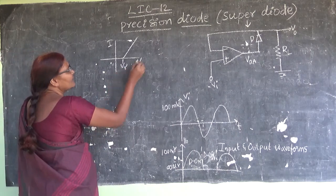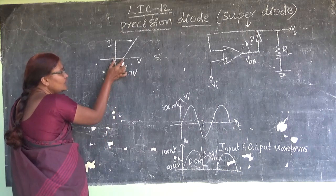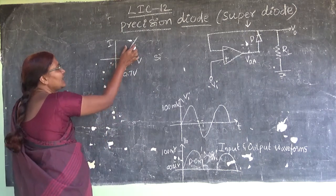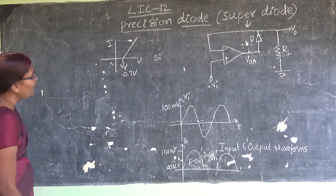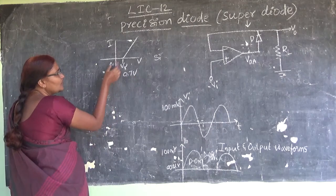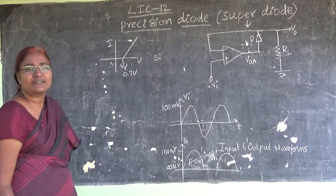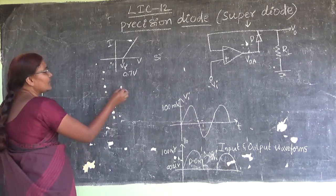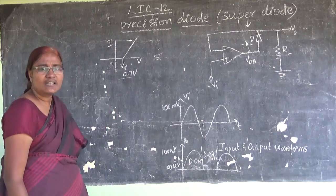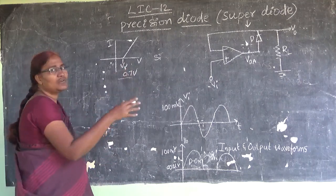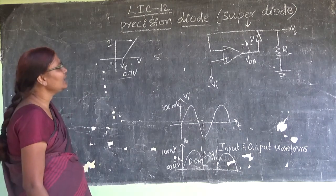This V gamma for a silicon diode will be 0.7 volts. That means if the input voltage is less than 0.7 volts, the current will not flow, and this normal P-N junction diode cannot be used.